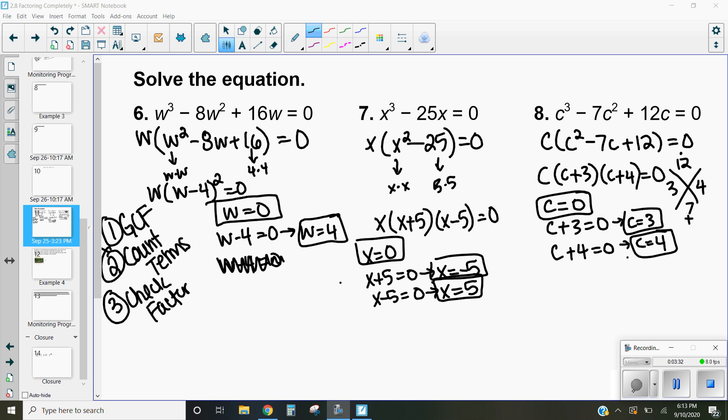In 8, I factored out a c and I ended up with a trinomial. So I use my X method to factor out, to split up those factors, and I end up getting c times c plus 3 times c plus 4. And those are all either monomials or have a degree 1, so those are the simplest they can be and they can't factor any further. So our solutions there are c equals 0, c equals negative 3, and c equals negative 4.